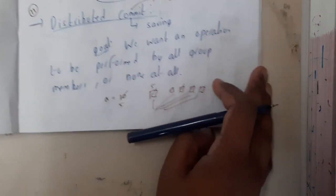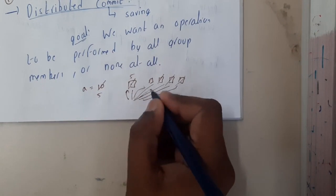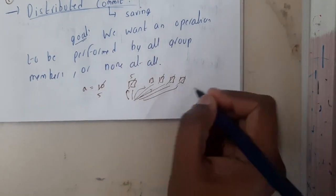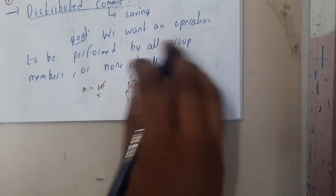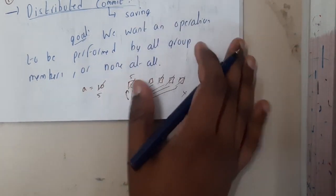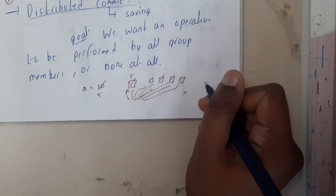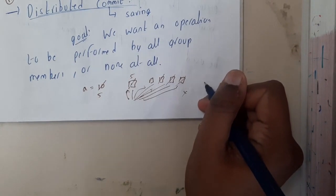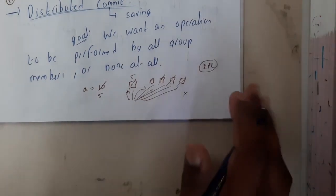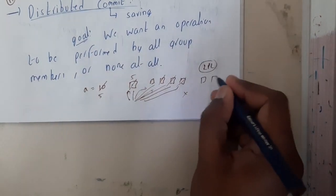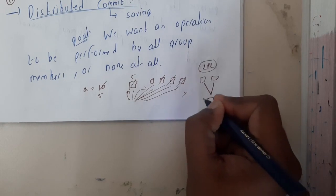That is the reason why we will be using a small trick. Instead of simply saying to everyone to update the value and assuming they will update — which is not a good idea — we use a trick. I will give you a small idea about that trick. Taking an example from two-phase locking: assume that there are two processes and you want to update some value.